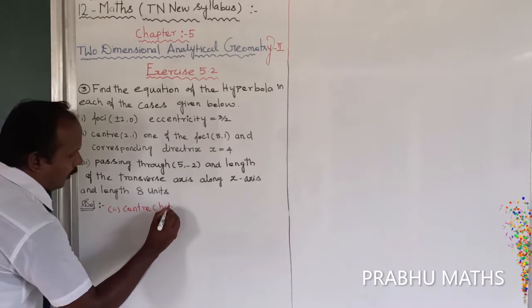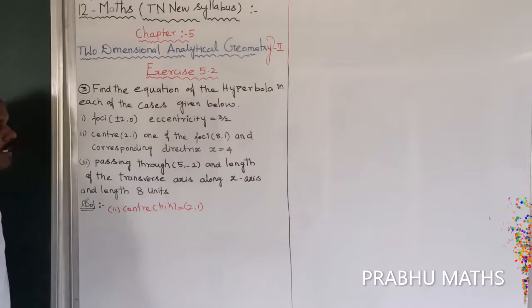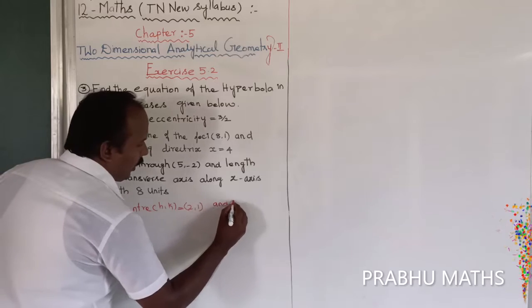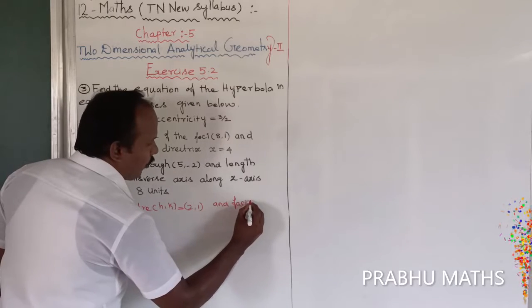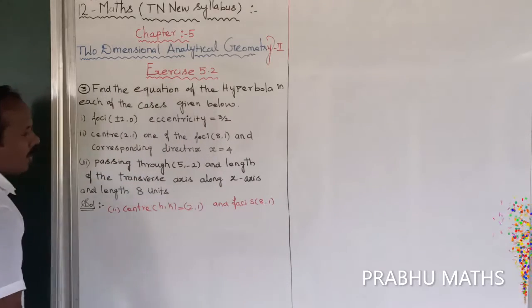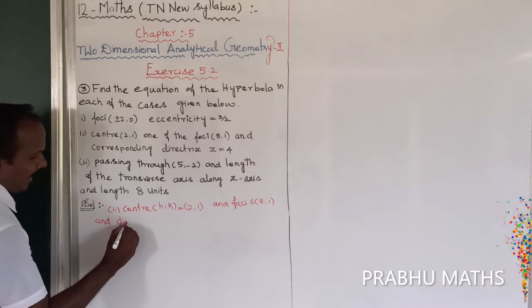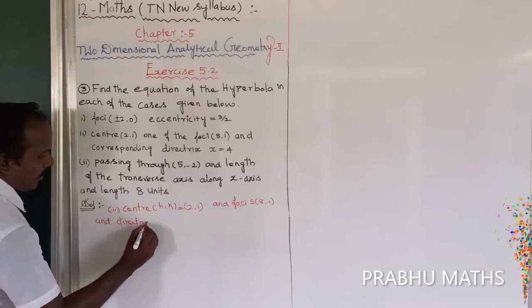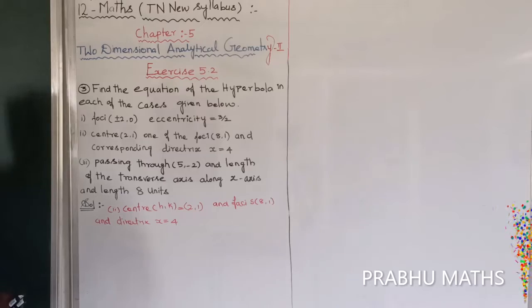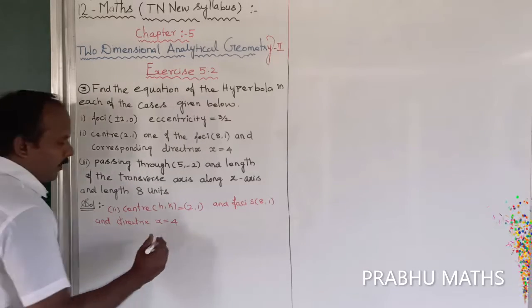The center h, k = (2, 1). The focus is at (8, 1). The directrix is x = 4.